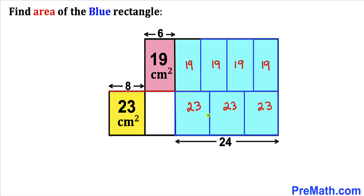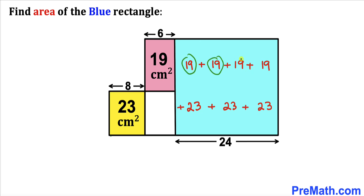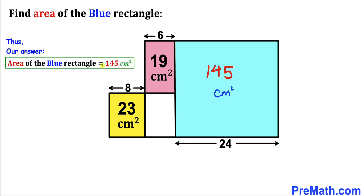The area of the whole blue rectangle is the sum of all these individual areas. Adding them up: 19 + 19 + 19 + 19 + 23 + 23 + 23 = 145 cm². So the area of the blue rectangle is 145 centimeters squared.